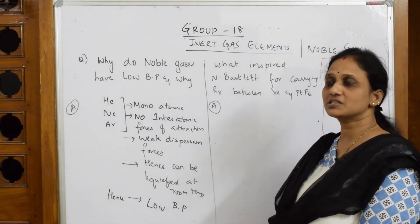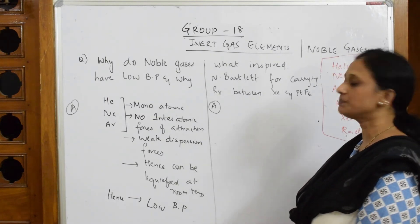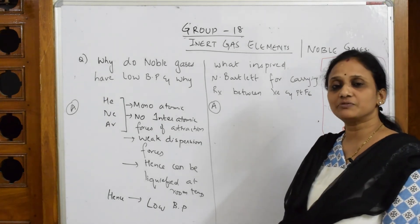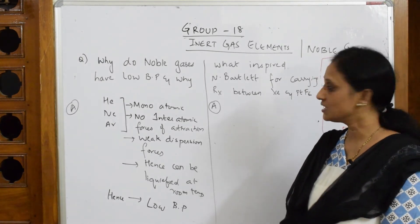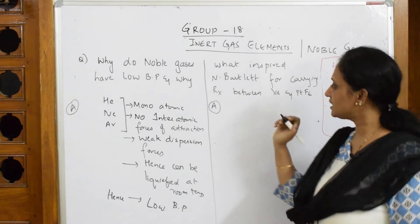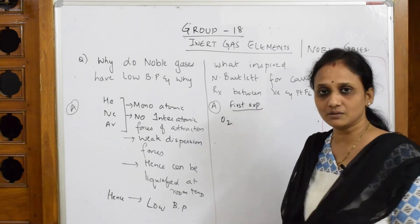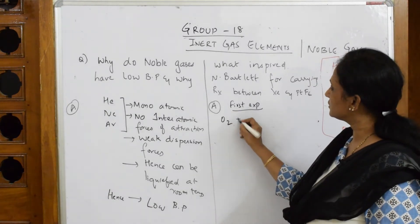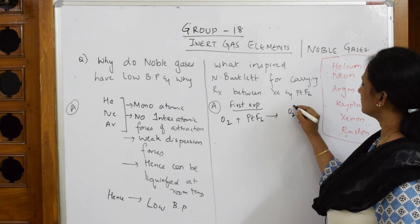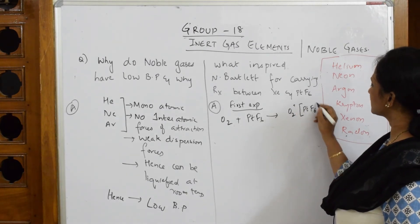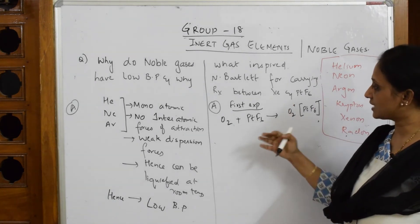Now let's look at a question about xenon compounds — what inspired Bartlett to carry out the reaction of xenon with PtF₆? Bartlett was the person to first discover this reaction. In his first experiment, he picked up oxygen and added PtF₆, and he got a complex: O₂⁺ and PtF₆⁻. This is the complex he obtained.